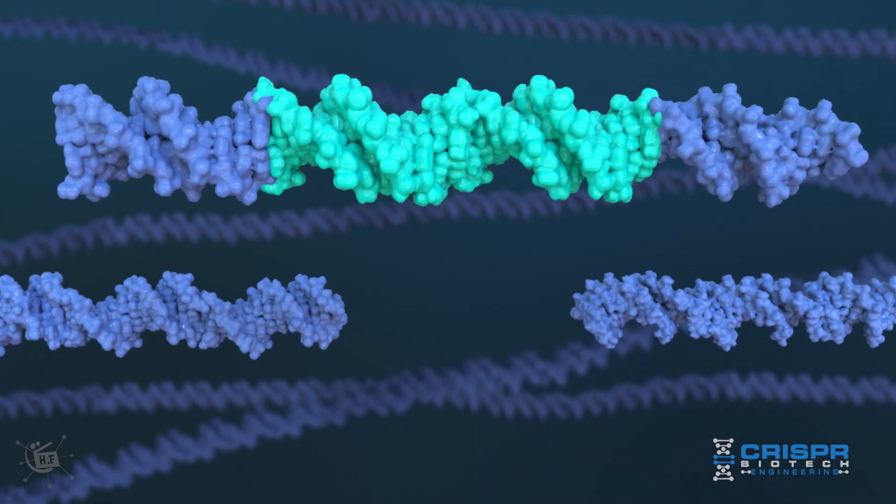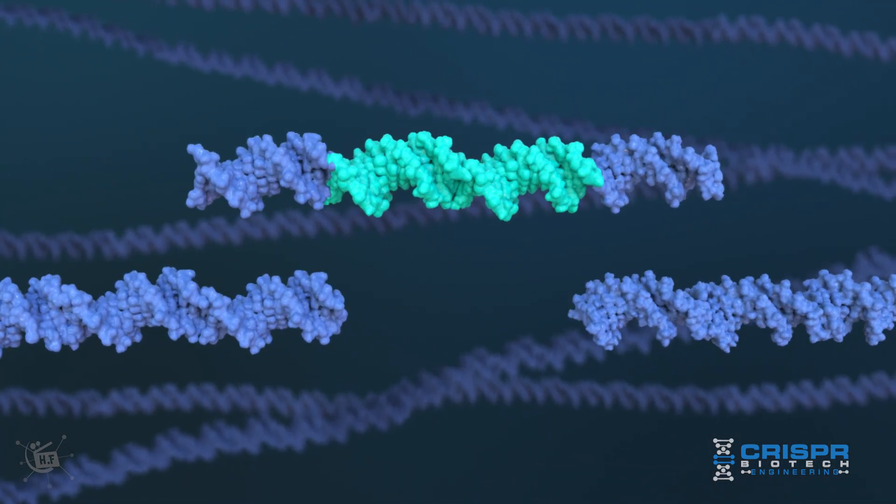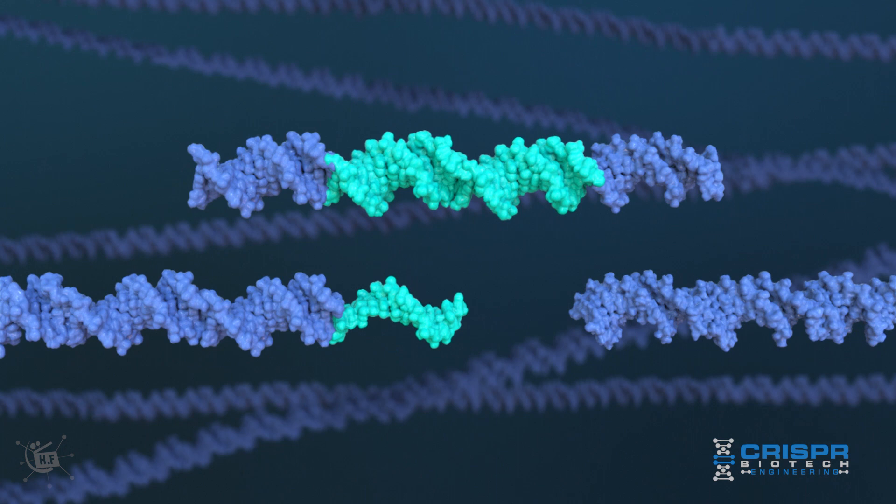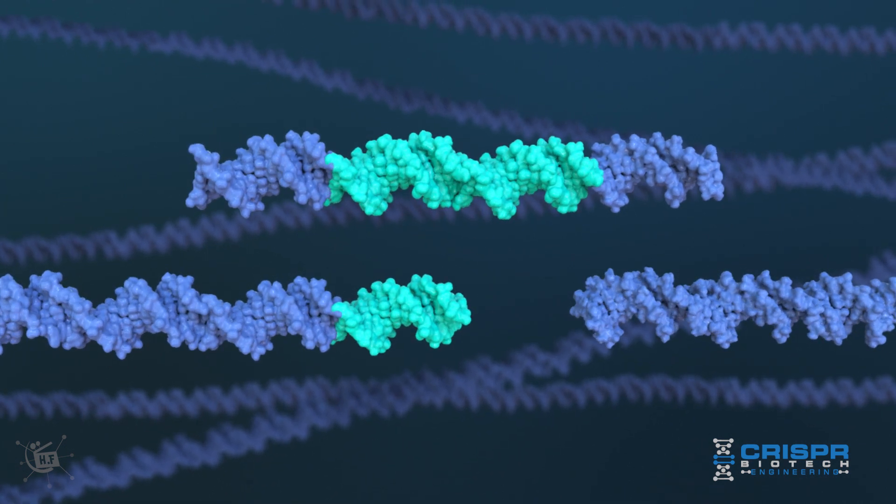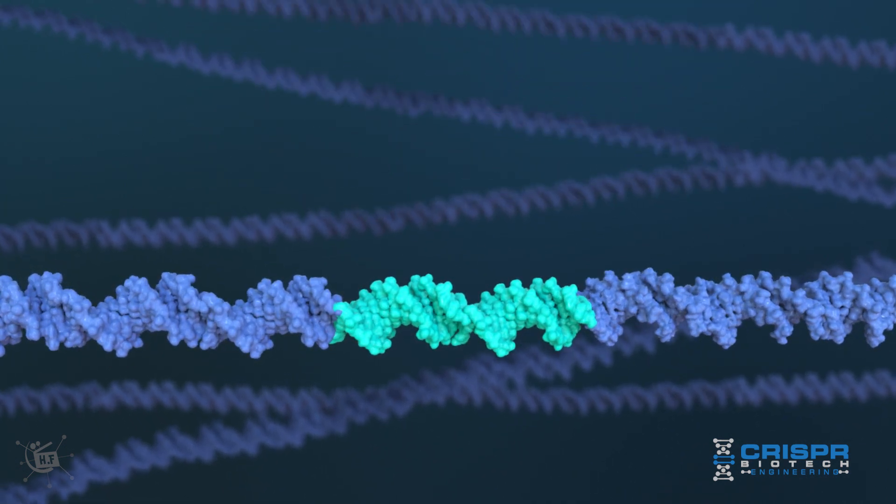When a DNA template is added with the CRISPR-Cas9 machinery, it will allow a cell to make a correction to a gene or a new gene to be inserted in homology-directed repair.